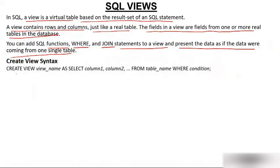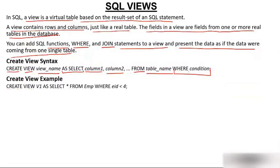The syntax is exactly the same as creating a table from a table. What we do is: CREATE VIEW, then the view name, then AS SELECT — because a table is already created and we are creating a view on that table, so we may not want all the columns. We specify which columns we want, then FROM which table, then a WHERE condition on which basis we are creating the view.